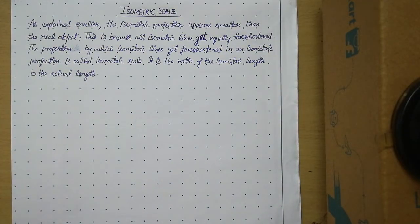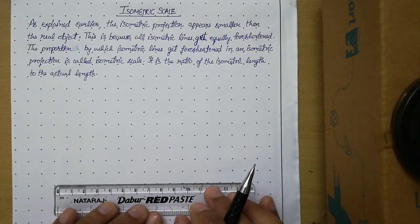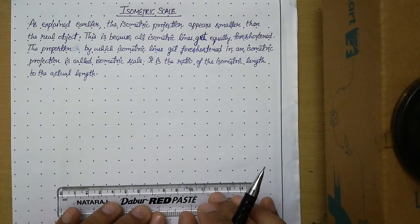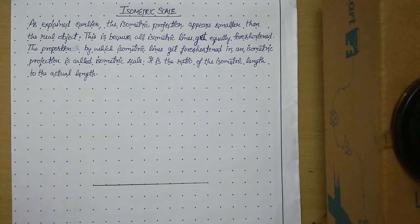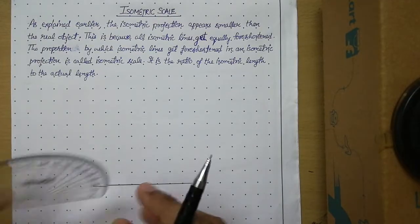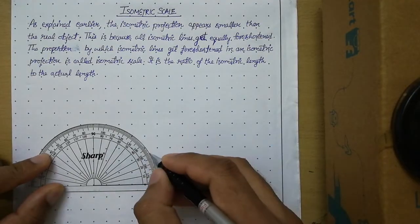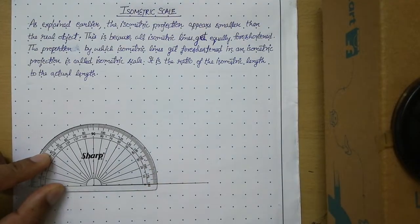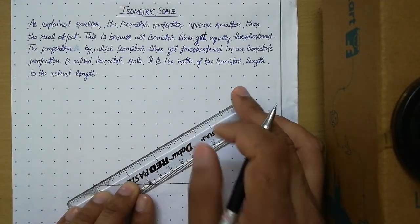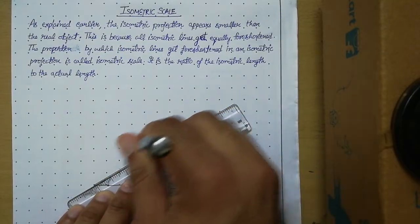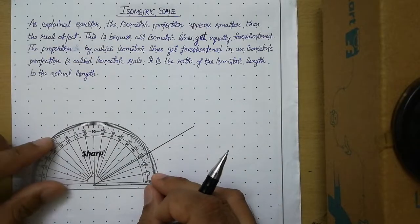So let us learn how to draw the isometric scale. The first step is to draw a baseline of sufficient length. Then at a point on this baseline, place a protractor and draw a line at an angle of 30 degrees. Then draw another line at 45 degrees from the same point.